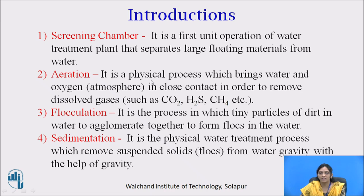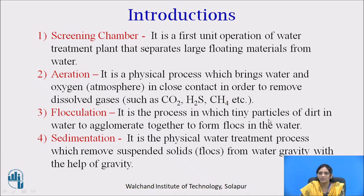Now we will see the theoretical definitions of each unit. First unit: Screening Chamber — it is the first unit operation of the water treatment plant that separates large floating material from the water. Second unit: Aeration — it is a physical process which brings water and oxygen into close contact in order to remove dissolved gases such as CO₂, H₂S, and CH₄. Third: Flocculation — it is the process in which tiny particles of dirt in water stick together to form flocs. Fourth: Sedimentation — it is the physical water treatment process which removes suspended solids from water with the help of gravity.